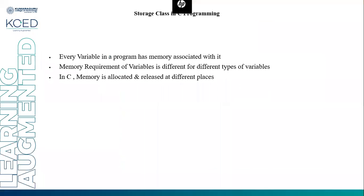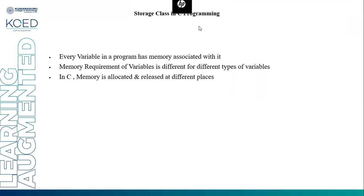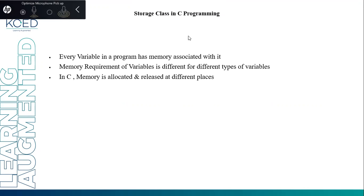Dear students, welcome to the video lecture of Storage Classes in C Programming. Every variable in a program has a memory associated with it. A memory requirement for a variable is different for different types of variables. You can see memory is allocated and released at different phases.